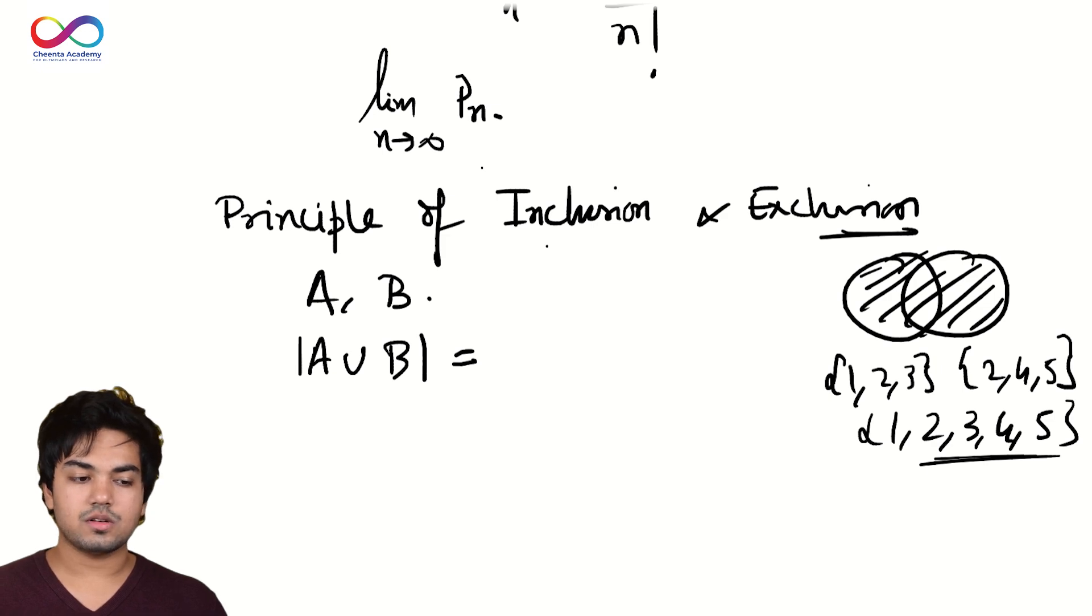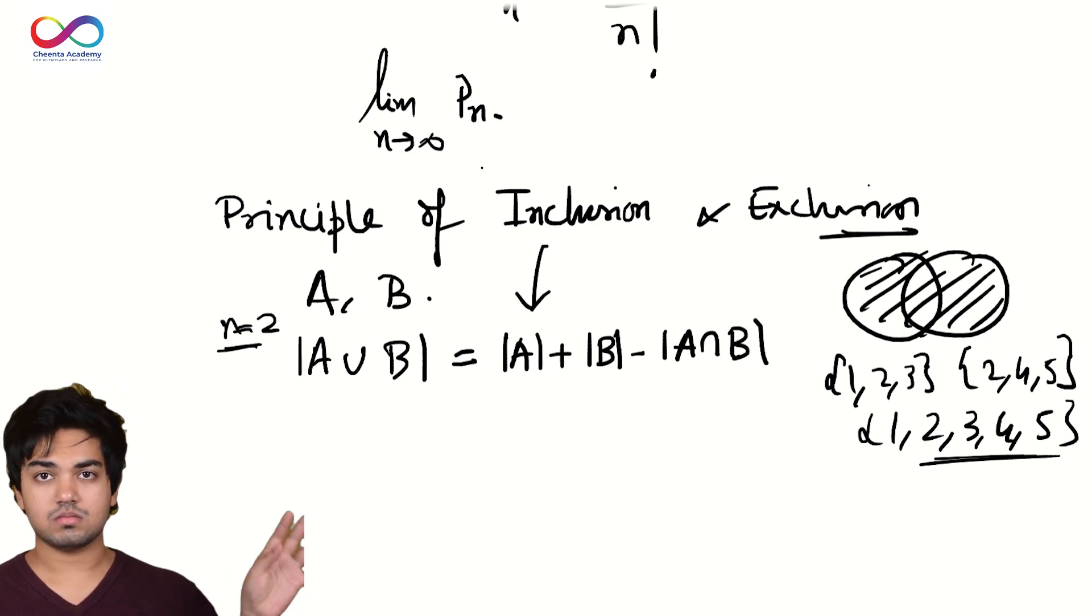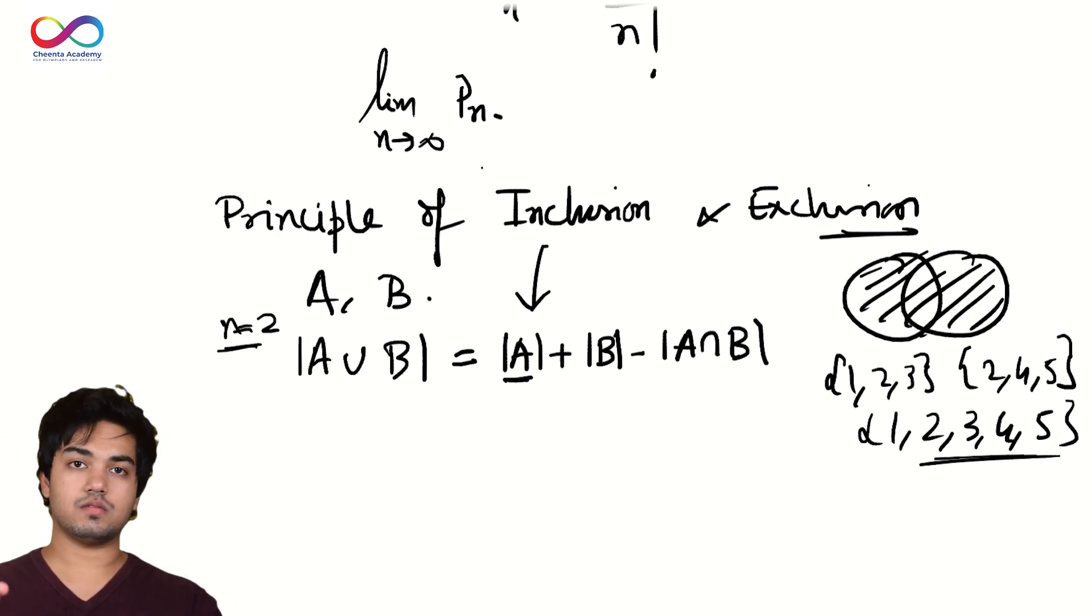Generally, what do we do? So what the principle of inclusion and exclusion says for n equals 2 when you have two sets is that |A union B| equals |A| plus |B| minus |A intersection B|. And the logic is really simple. The cardinality of A counts all the elements of A once. And similarly, cardinality of B counts every element in B once. All the elements that are in A and B, hence in the intersection, are counted twice. So you subtract it out once to get a single count of everything.